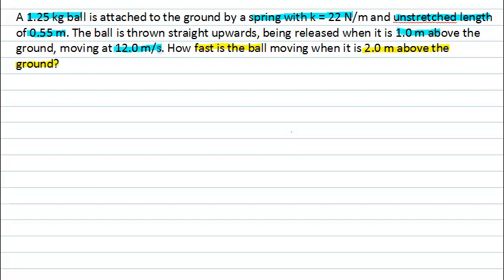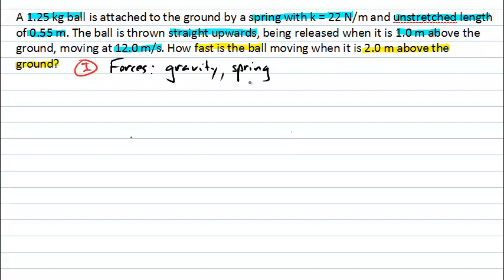In addition, it tells us that the ball is thrown straight upwards. Let's begin by trying to interpret what's going on in this particular problem. Importantly, there are some forces acting on the object as it moves. The forces we have here are the gravitational force, and since there's a spring attached, there's going to be some kind of spring force as well.